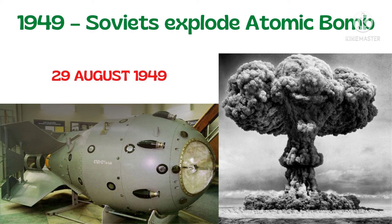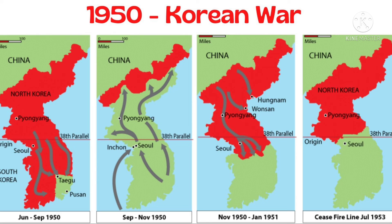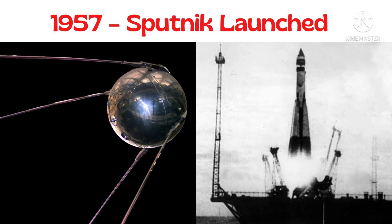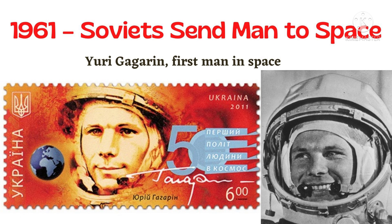In 1949, the Soviet Union exploded an atomic bomb — the USA was no longer the only nuclear power. The Korean War: the Soviet Union controlled communist North Korea, while the USA influenced democratic South Korea. In 1955, the Warsaw Pact was formed as a counter to NATO — the Soviet Union created a buffer zone of Eastern European countries, where any attack on a Warsaw Pact country would be treated as an attack on Russia.